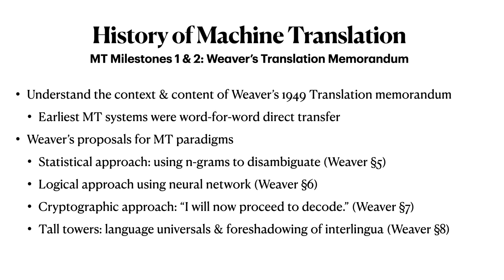You will be able to identify and explain Warren Weaver's four proposals for machine translation paradigms from his 1949 translation memo. These four approaches are: a statistical approach using n-grams to disambiguate; a brief proposal of a logical approach, potentially using neural networks; a cryptographic approach, characterized by Weaver's famous quote, 'I will now proceed to decode'; and finally, Weaver's proposal using a metaphor of tall towers, encompassing language universals and foreshadowing interlingua.